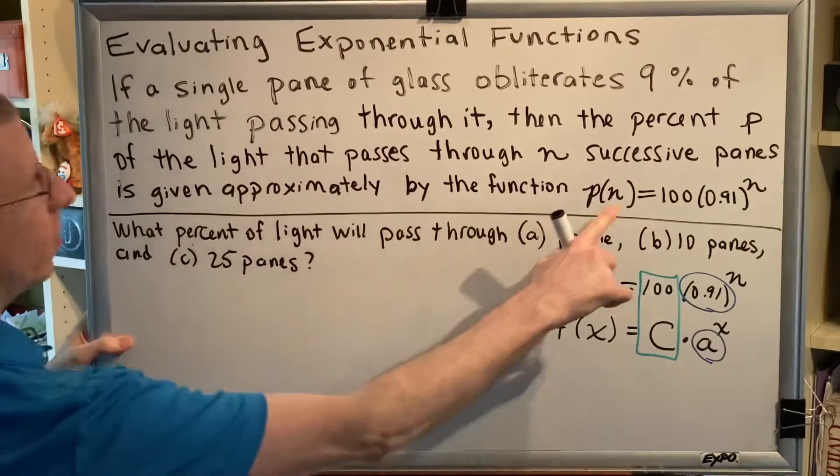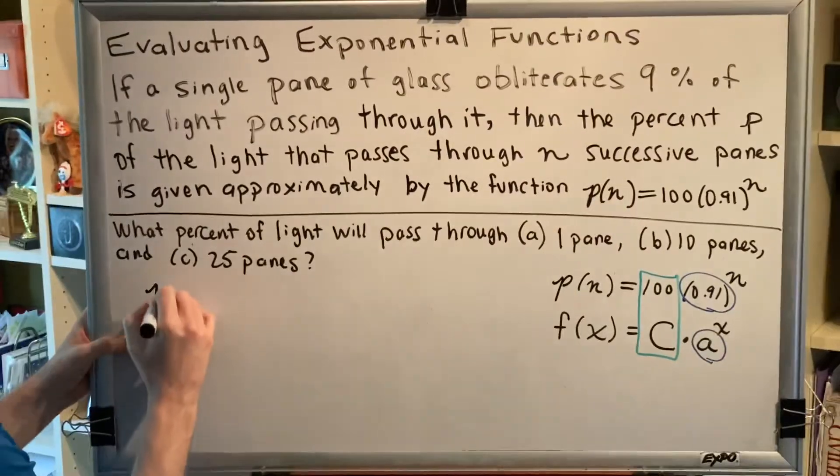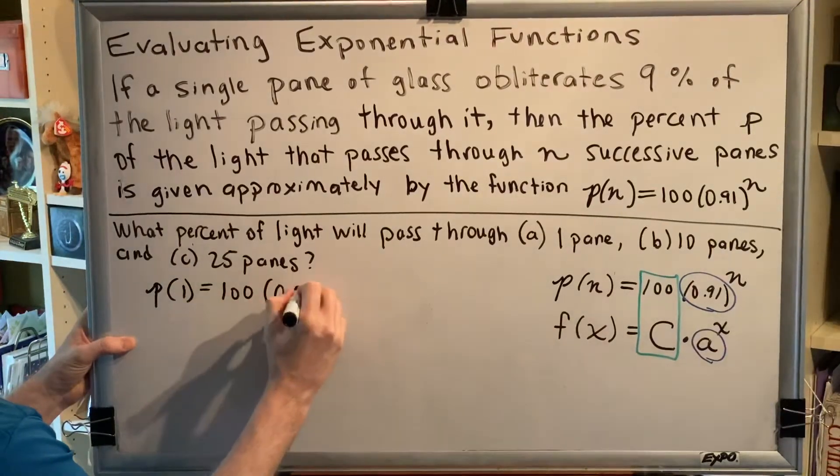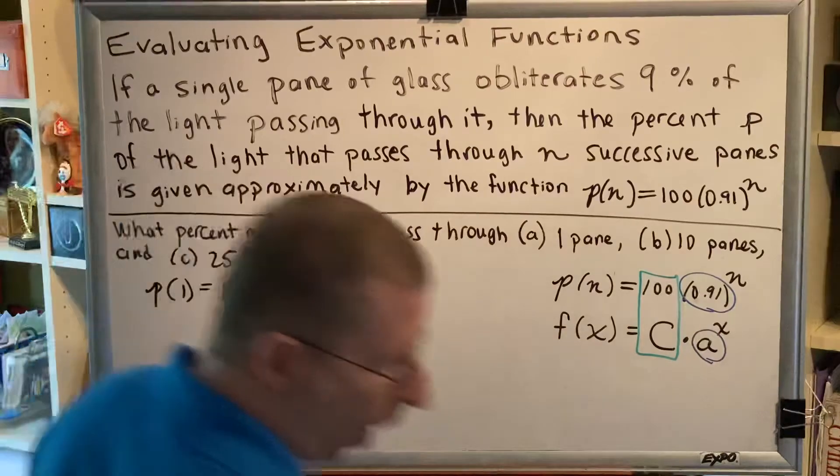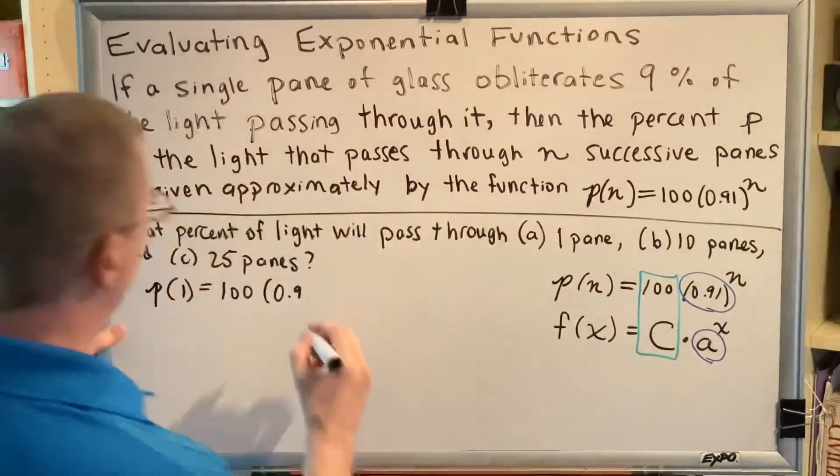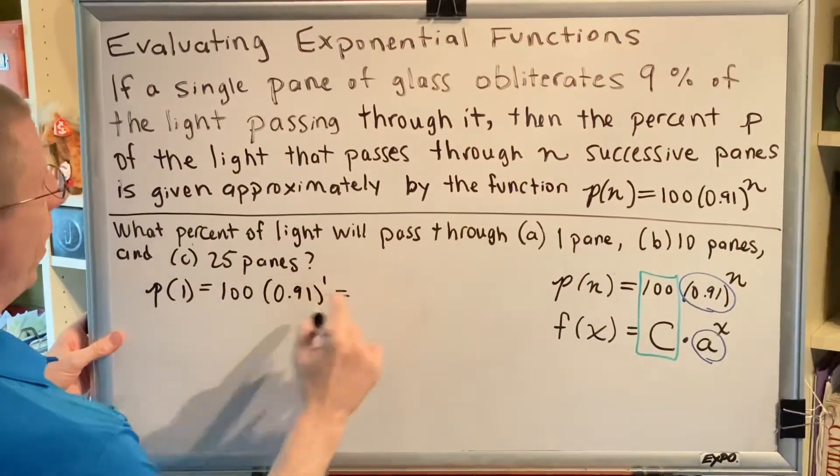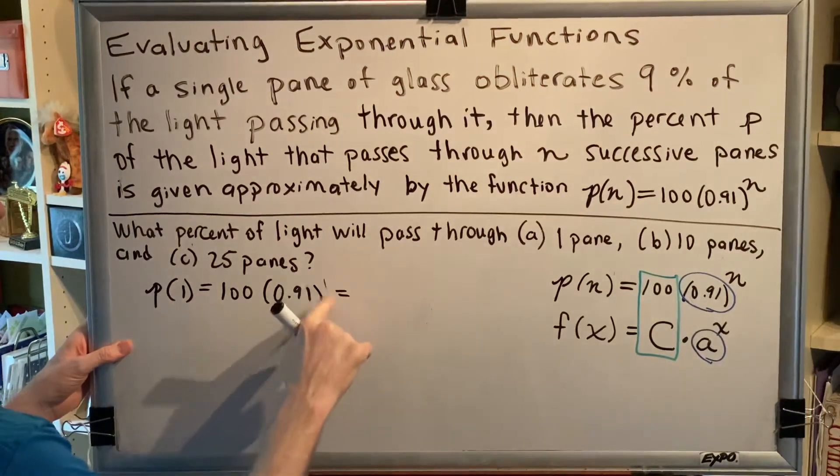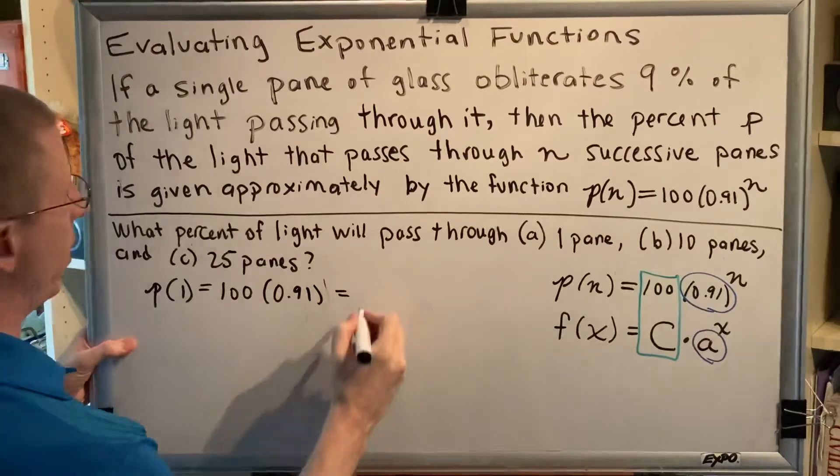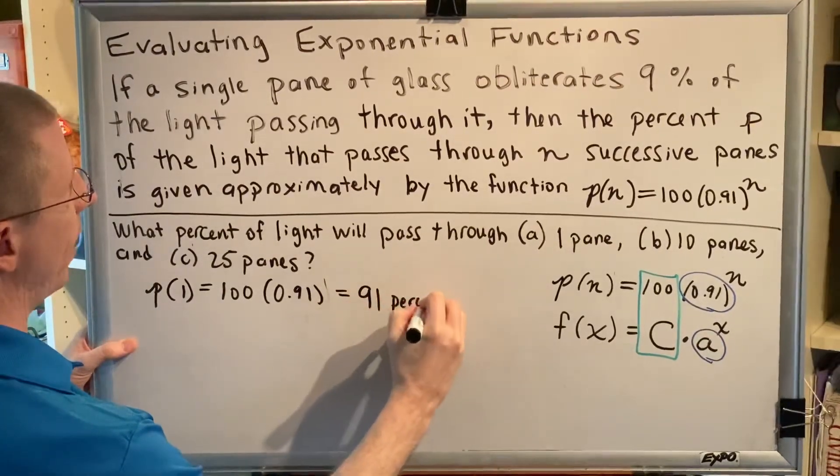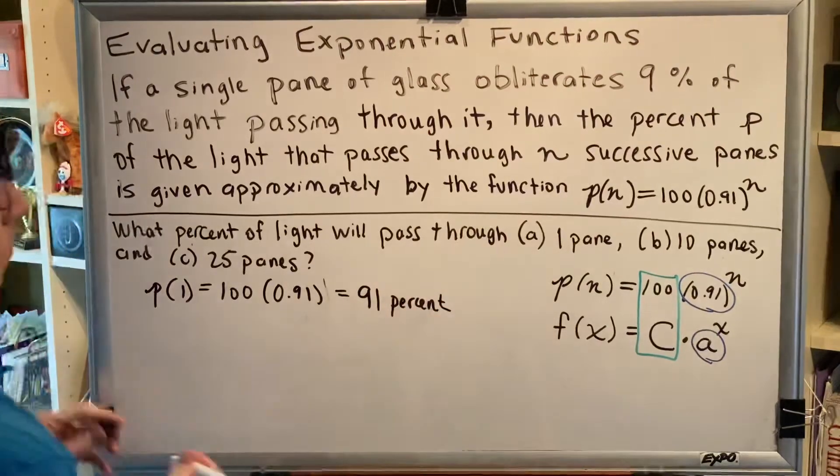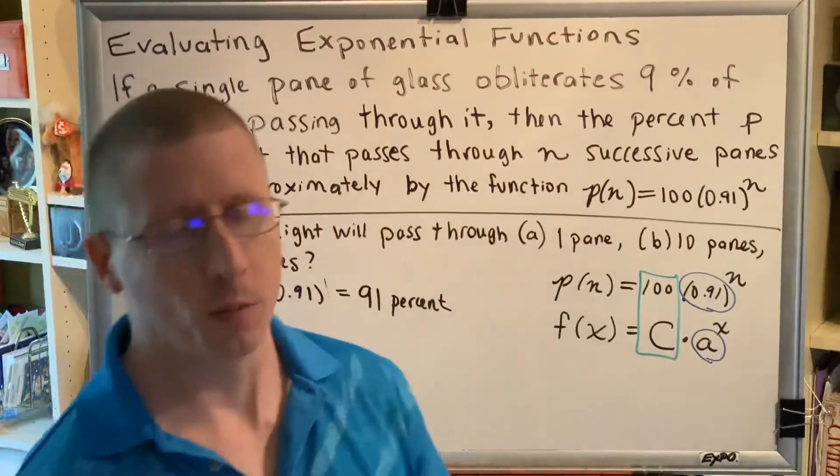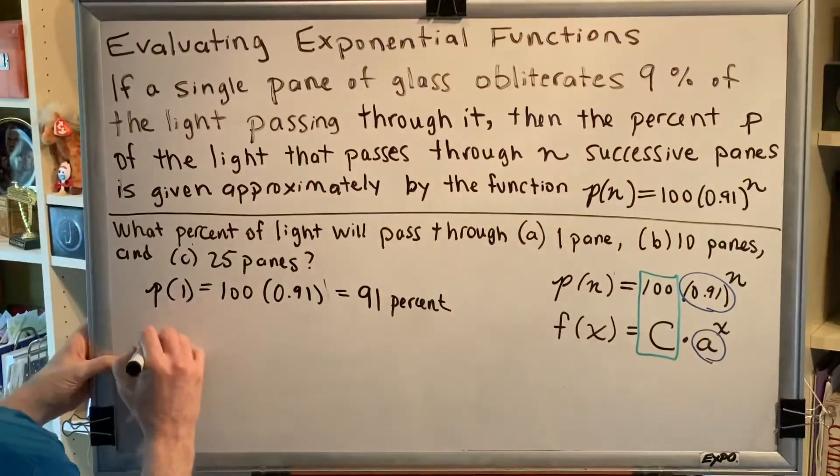So we're going to plug into this function with n equals 1. We get p of 1 equals 100 times 0.91 to the first power. Well, anything to the first power is itself. So this is just 100 times 0.91. And then 100 times 0.91 is 91. So we get the answer 91%. This makes sense. This is consistent with the information that was provided. If 9% is obliterated, then 91% gets through.